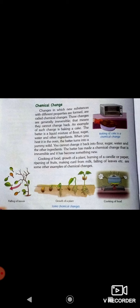The second category is chemical change. Changes in which new substances with different properties are formed are called chemical changes. These changes are generally irreversible — they cannot change back. An example is baking a cake: the batter is a liquid mixture of flour, sugar, water and other ingredients. When you heat it in the oven, the batter turns into a solid. You cannot change it back into flour, sugar, water and other ingredients. The batter has undergone a chemical change that is irreversible and has become something new.